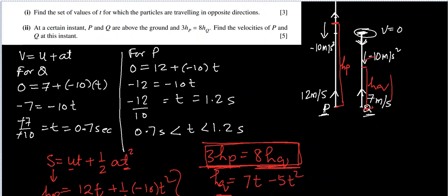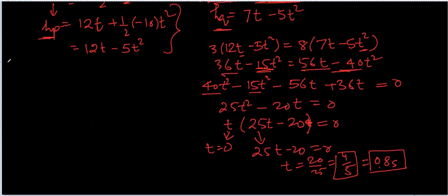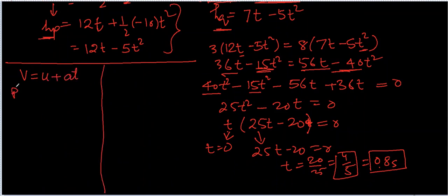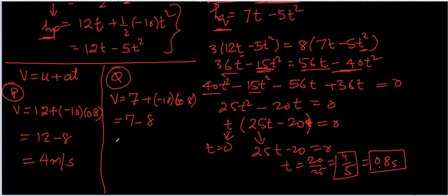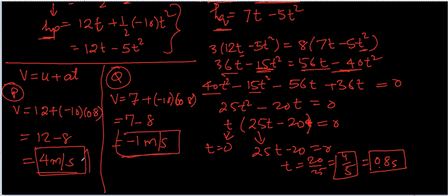At T = 0.8 seconds, the question asks for the velocities of P and Q. Using V = U + AT: for P, V = 12 + (−10)(0.8) = 12 − 8 = 4 meters per second (upwards). For Q, V = 7 + (−10)(0.8) = 7 − 8 = −1 meters per second. So at that instant, P is moving upward at 4 m/s and Q is moving downward at 1 m/s — they are traveling in opposite directions.